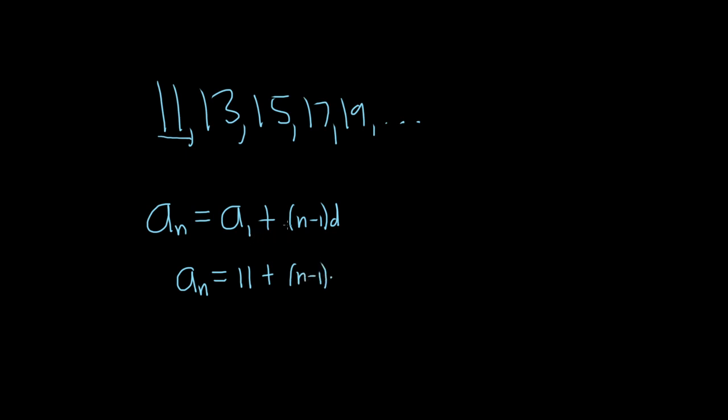d is the common difference. It's the number that keeps being added over and over again. In this case it's really easy to see that you just keep adding 2. 2 plus 11 is 13, plus 2 is 15, et cetera. So d is 2.